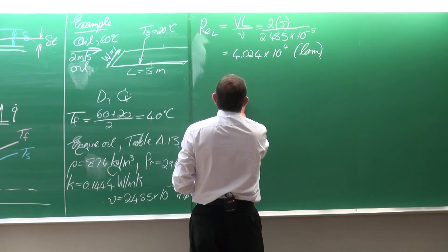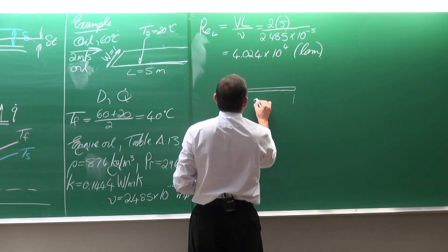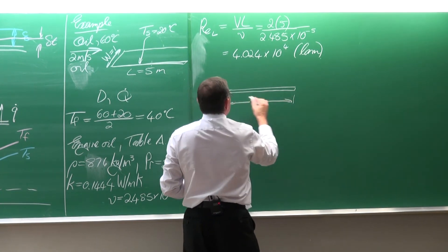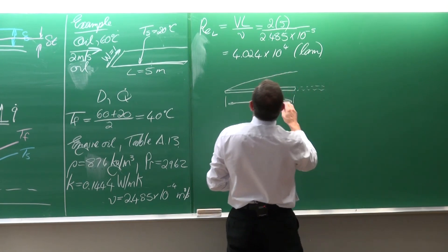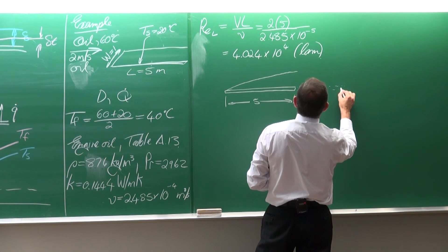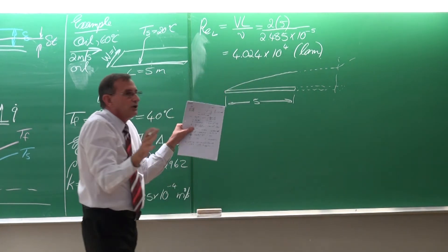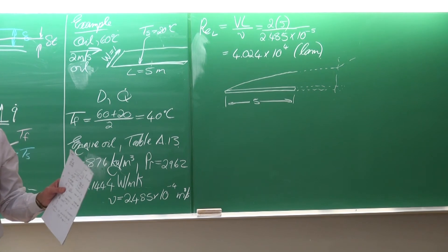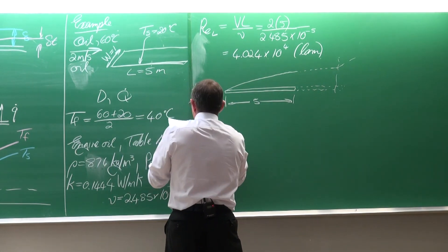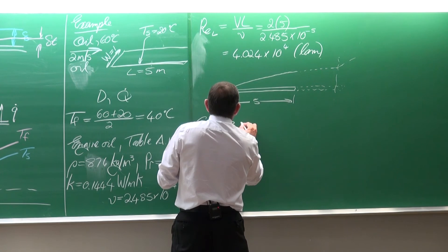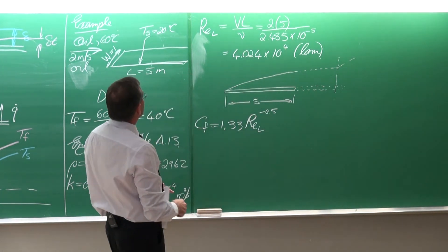It is important to know this because the boundary layer is going to develop along the entire 5-meter plate, and the plate would need to be at least 25% longer before going into transition. So everything we consider is laminar flow — the easiest case.